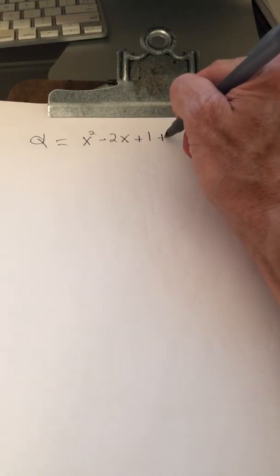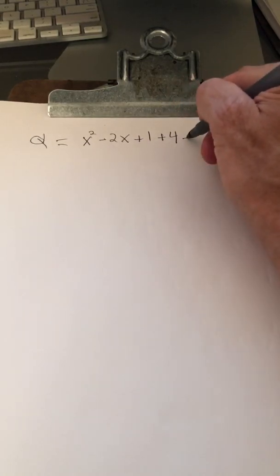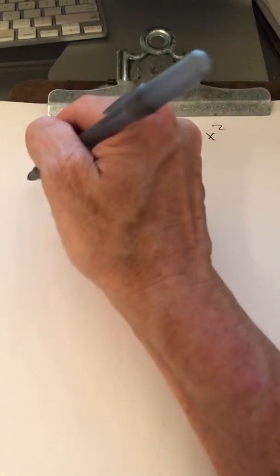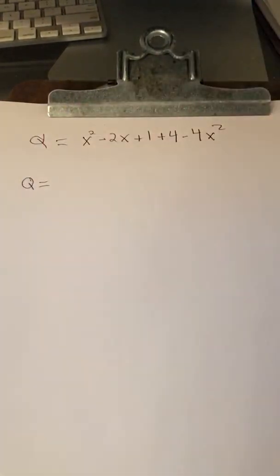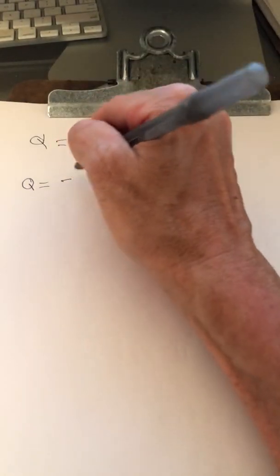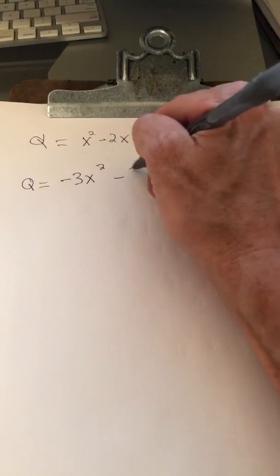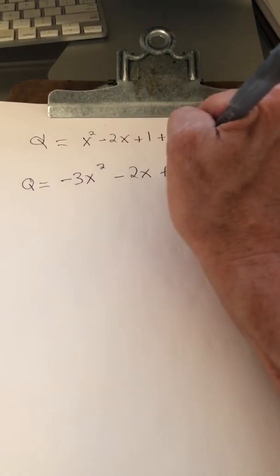So this is plus 4 minus 4x squared. So, combined like terms, Q ends up being negative 3x squared minus 2x plus 5.